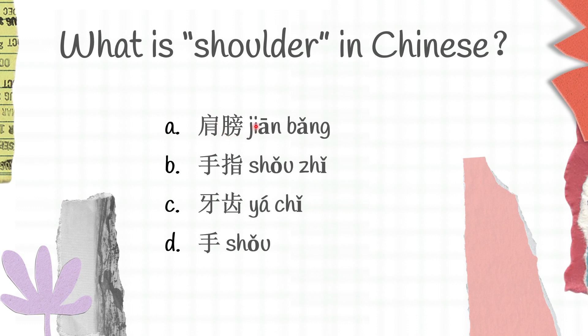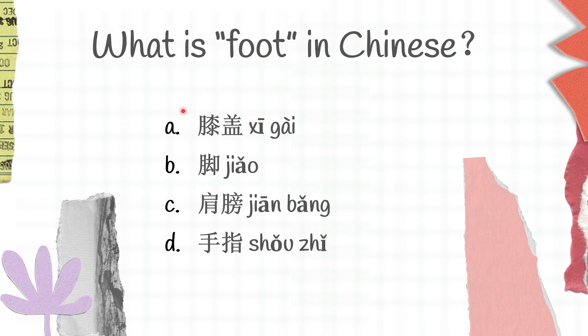The next one: what is foot in Chinese? We have A, xīgài; B, jiǎo; C, jiānbǎng; D, shǒuzhǐ. Xīgài is knee, jiǎo is foot, jiānbǎng is shoulder, shǒuzhǐ is finger. And foot in Chinese is B, jiǎo.